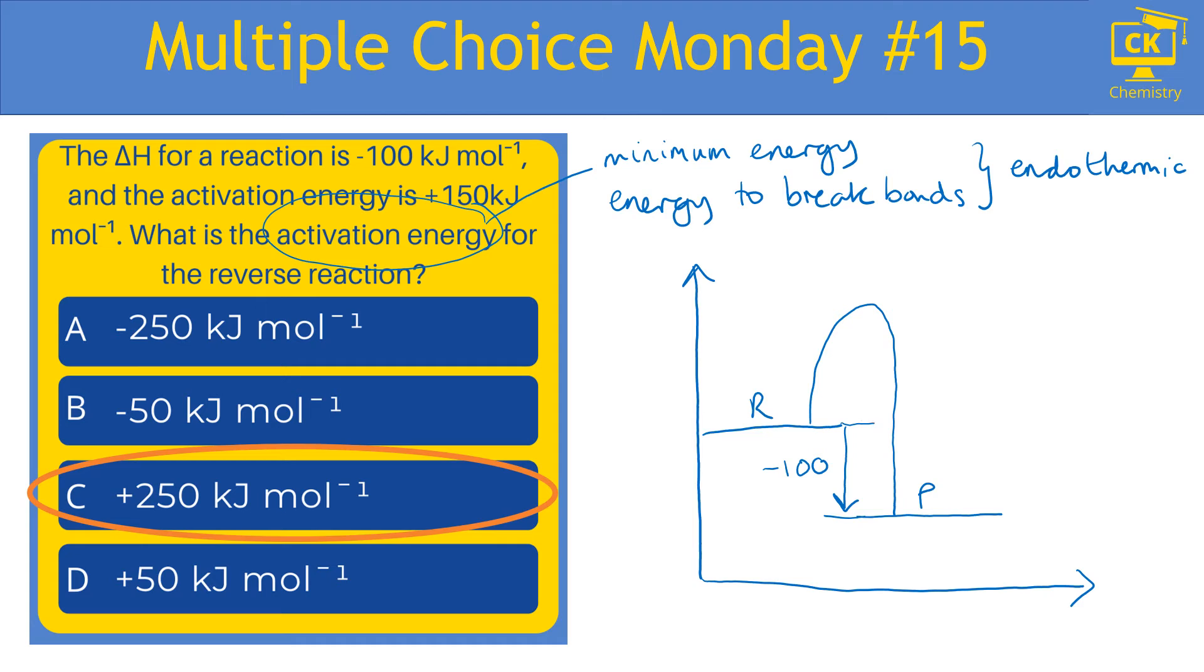And what that tells me, I haven't done this particularly well to scale, is the activation energy is the energy from where the reactants start to the highest point in the reaction. And so that value is equal to 150. So we've got 150, we've got 100.